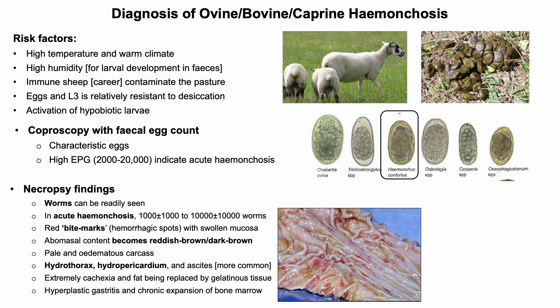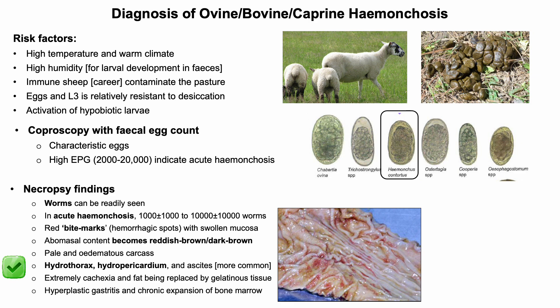Necropsy findings depend on the clinical syndrome. In acute hemonchosis, 1,000 to 10,000 worms may be present in the abomasum. Worms and numerous red marks or hemorrhagic spots can be seen on the mucosal surface. Abomasal content becomes reddish-brown or dark brown. Pale mucous membranes with hydrothorax, hydropericardium, and ascites are also common.